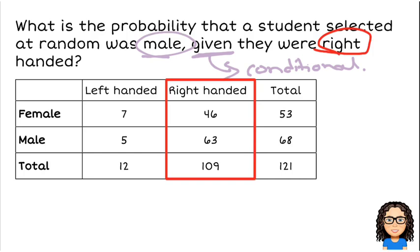So there are 109 students who are right-handed. 46 of whom are female, 63 of whom are male. From that group, what is the probability that a student was male? So there are 63 males out of 109 right-handed students.